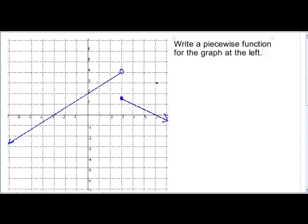First thing we need to do is look at the graph and decide how many pieces we have. We see we have one piece here going from negative infinity on x to 3, and then we have a second piece that goes from 3 all the way to positive infinity.